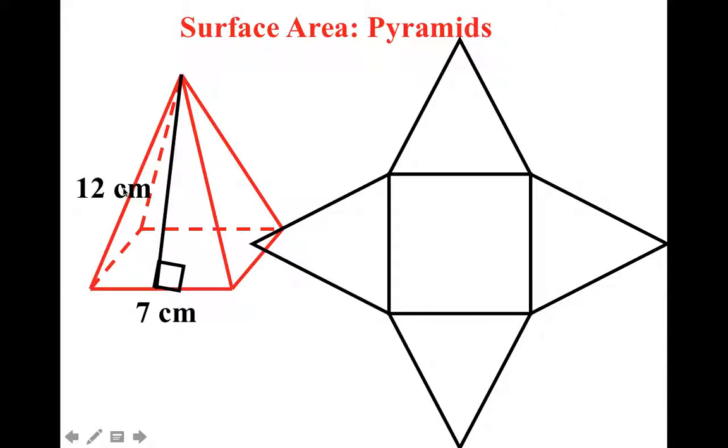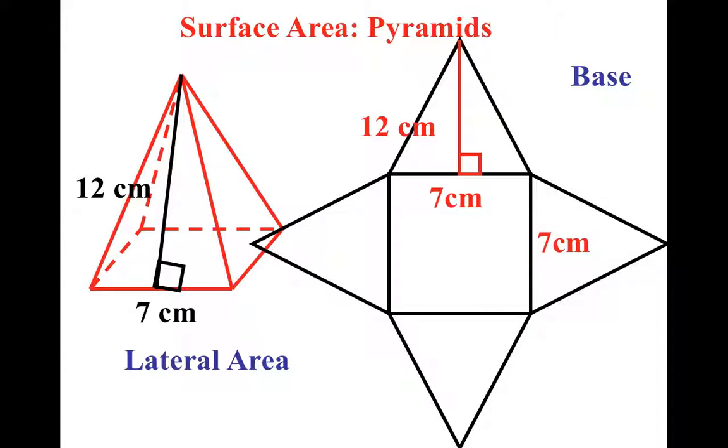And then we have to be able to take these numbers and be able to put them in the appropriate spot of our lateral area. So notice where we have our numbers. Since the 12 centimeters is going from the top of the triangle down to the base, and the 7 is going along the side, this is how the numbers would work out.